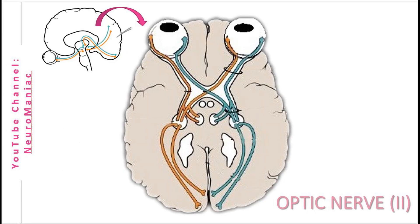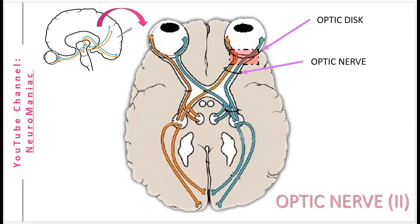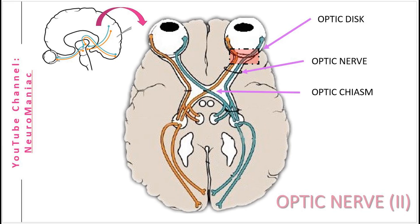Next up, cranial nerve 2, the optic nerve. This nerve starts in the eye and exits at the optic disc, in particular the blind spot. It then travels through the optic canal and crosses over with the optic nerve from the other eye to form the optic chiasm.